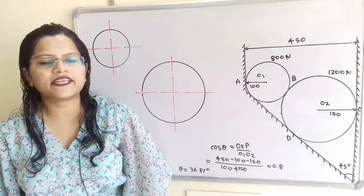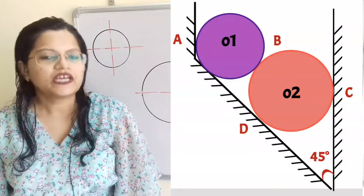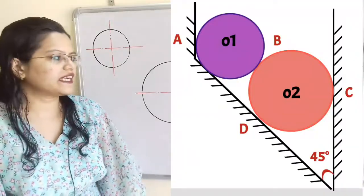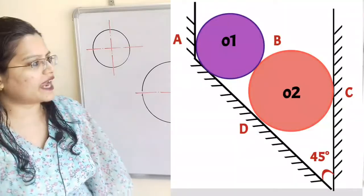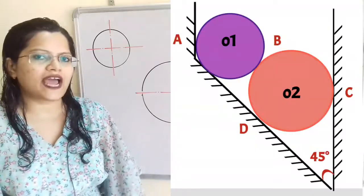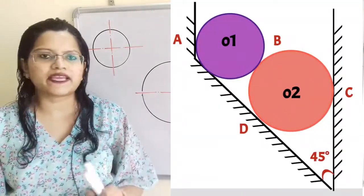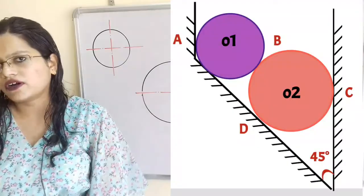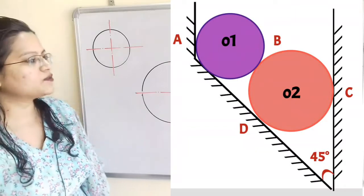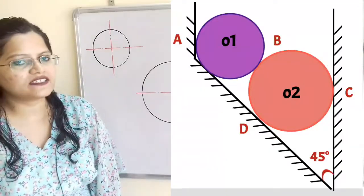Let us understand the given system. There are two cylinders with centers O1 and O2. The cylinder with center O1 has radius 200 mm and weight 800 N, and the cylinder with center O2 has radius 300 mm and weight 1200 N. These two cylinders are not identical. They rest on an inclined surface making an angle of 45 degrees with the vertical surface. The contact points are A, B, C and D, and we have to find the reactions at these points.